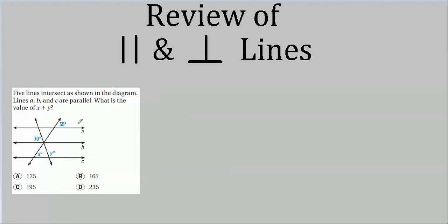Here's another problem with a lot going on — let's not get confused. Considering lines A and C with the transversal between them, those two angles look like corresponding angles, which means x = 55 degrees.